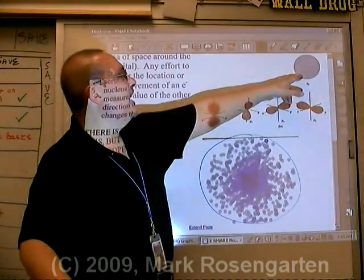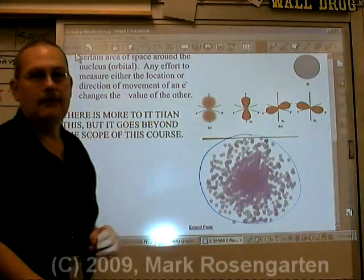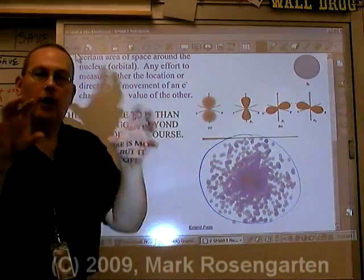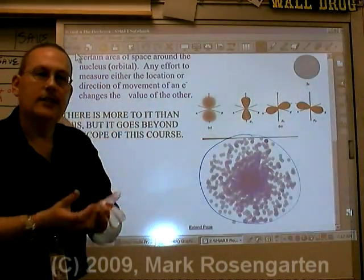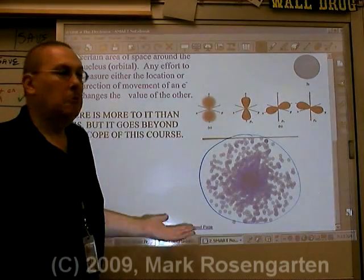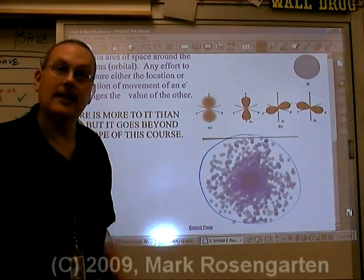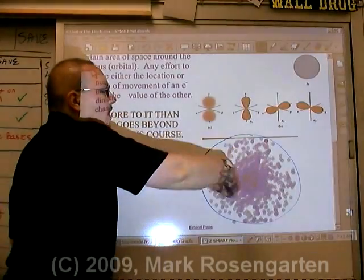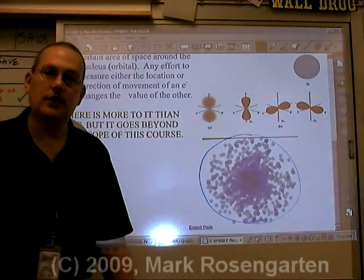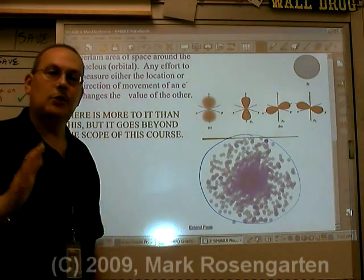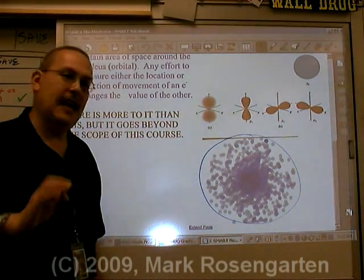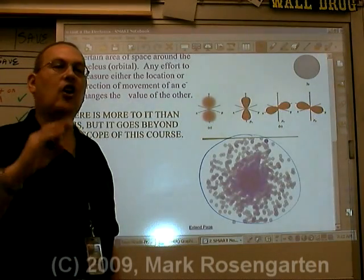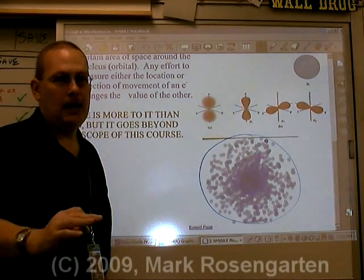This is what's called the S sub-level. The S sub-level is the shape of a sphere around the nucleus. Where is the electron in that sphere? We haven't got the slightest idea. All we know is it's going to be somewhere within that region of space around the nucleus. This is why the quantum mechanical model is also sometimes known as the charge cloud model.